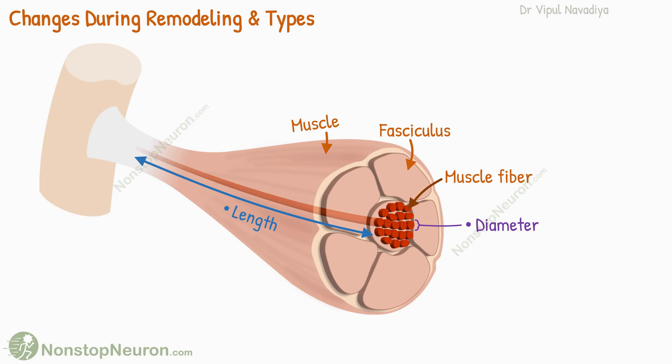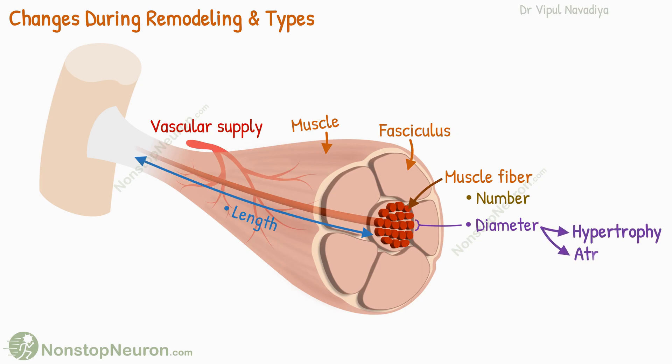Even the number of muscle fibers may increase in extreme cases. Additionally, the vascular supply, which provides nutrients to the muscle, may also undergo changes to support increased demands. Depending on the parameter affected, the types of remodeling are hypertrophy, atrophy, hyperplasia, and adjustment in length.